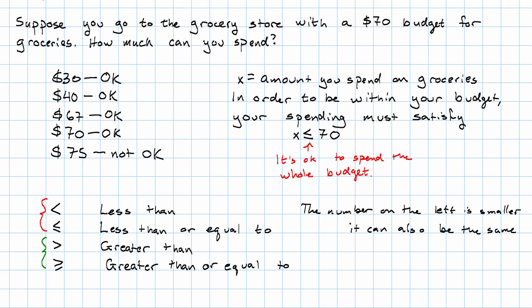Greater than is exactly the opposite. If we have just this greater than symbol, then the number on the left has to be larger. If we have greater than or equal to, it can also be the same.